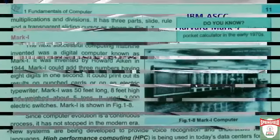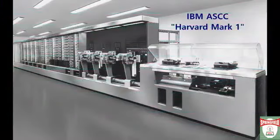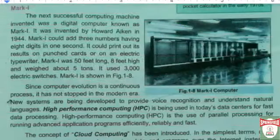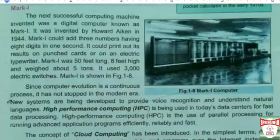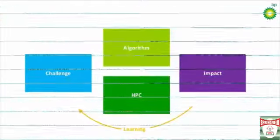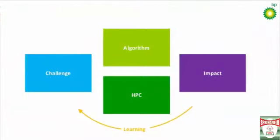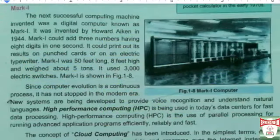Now we talk about Mark One. The next successful computing machine was a digital computer known as Mark One, invented by Howard Aiken in 1944. Mark One could add three numbers having eight digits in one second, and it could print out its results on punch cards or on an electric typewriter. Mark One was 50 feet long, eight feet in height, and weighed about five tons. It used three thousand electrical switches, as shown in the figure.